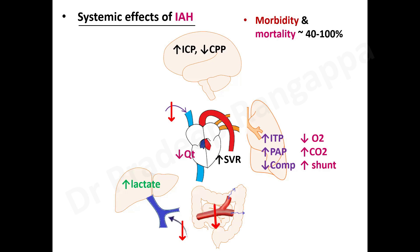In the gut, hypoperfusion leads to increased lactate — in pancreatitis, a rising lactate may indicate microcirculation being compromised by compartment syndrome and should prompt more aggressive relief of intra-abdominal pressure. Very commonly, renal perfusion is affected: hypoperfusion of the kidneys leads to reduced GFR and reduced urine output, causing acute kidney injury.